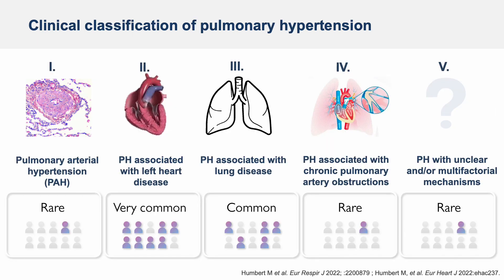To sum up, right heart catheterization is the only confirmative diagnostic tool of PH, and the classification of PH categorizes patients into 5 groups. Looking at the prevalence of the disease, it is important to know that Group 2 — PH associated with left heart disease — is the most common cause of PH. The second most common cause is Group 3 — PH associated with lung disease. PAH (Group 1) and CTEPH (Group 4) are very rare forms of pulmonary hypertension.